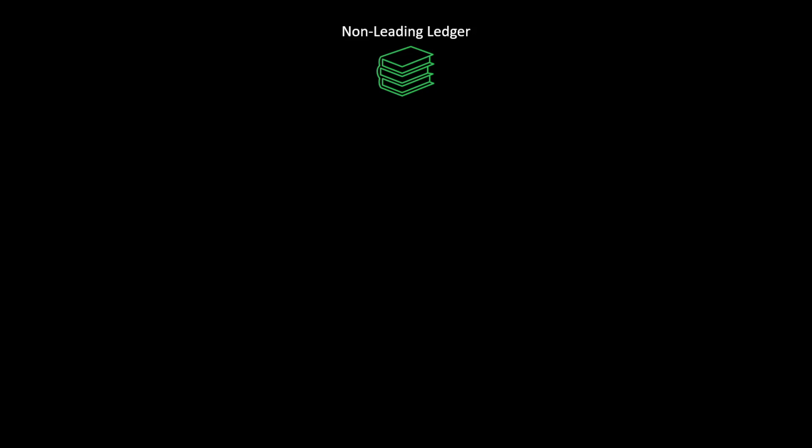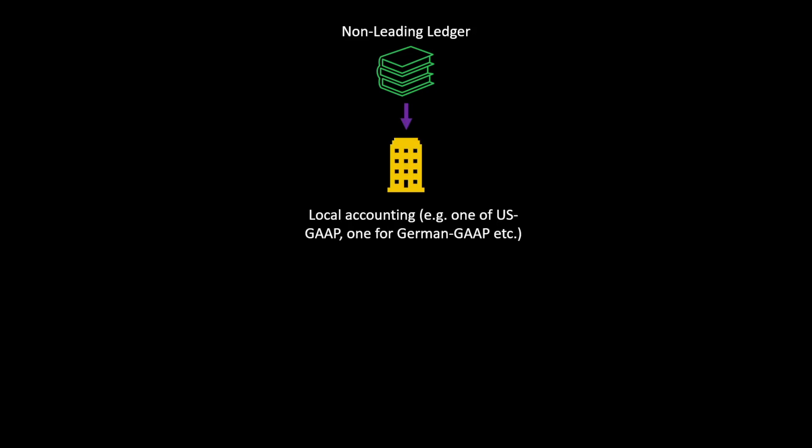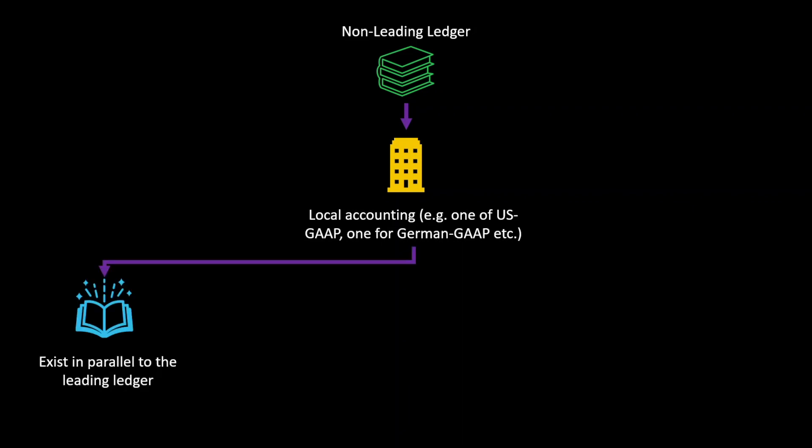The non-leading ledger, on the other hand, is used to reflect the local accounting. So for instance, if we have one subsidiary in Germany, we can create one non-leading ledger to reflect the German GAAP — the accounting principles of Germany. If we have another subsidiary in the United States, we can use another non-leading ledger for the United States, and so on. Or we could even use one non-leading ledger for all of these subsidiaries, which is also best practice in most cases, meaning that the non-leading ledger exists in parallel to the leading ledger.